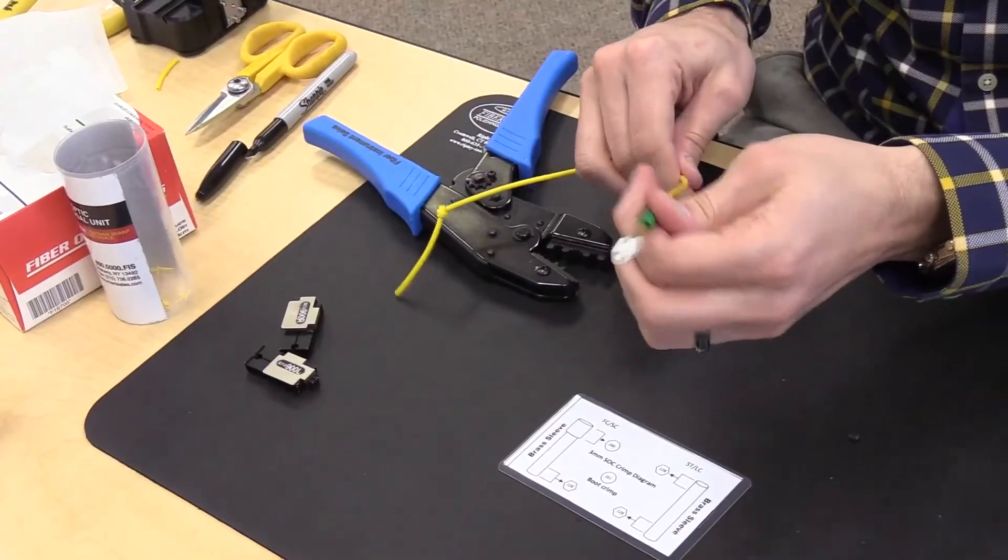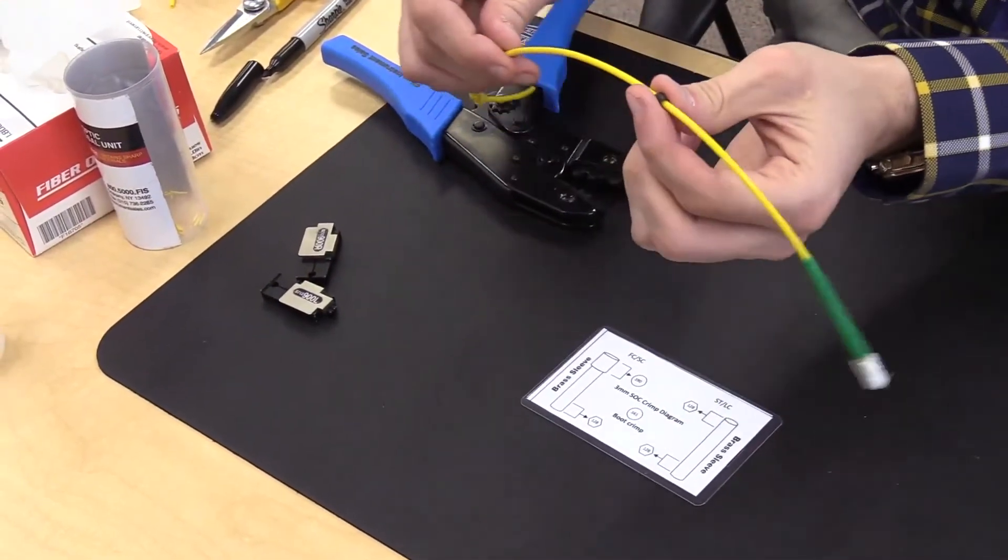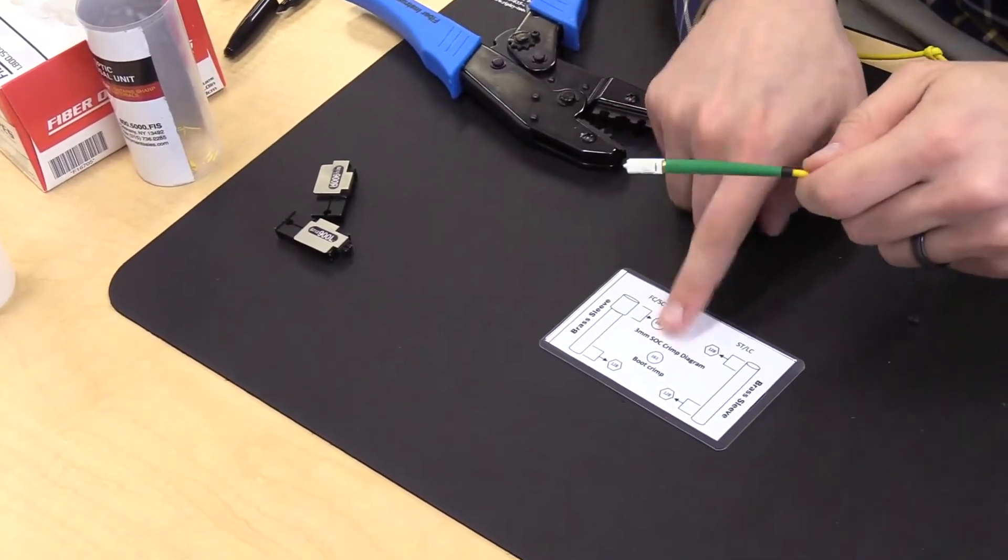Slide the boot up, then the black crimp ring up to the back of the boot. And crimp it by using the 161-round.